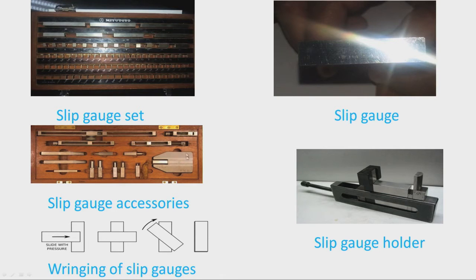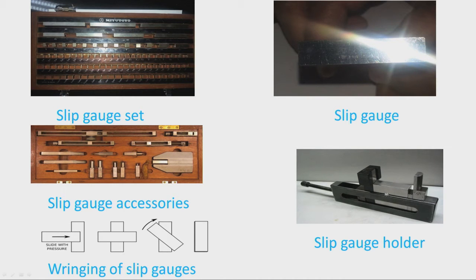The slip gauge accessories include a slip gauge holder. Different slip gauges can be assembled by the wringing process to build the required length, placed in the slip gauge holder, and this distance can be used as the standard for measurement purposes.